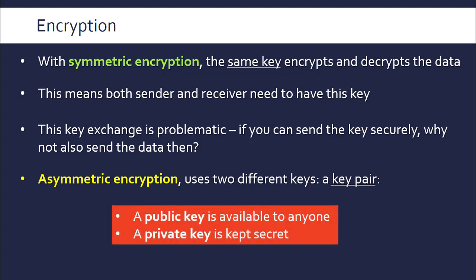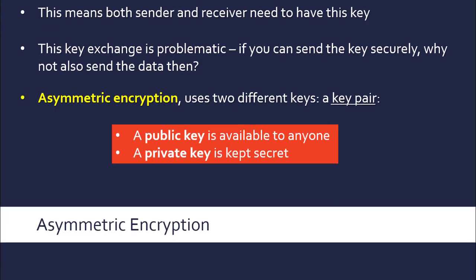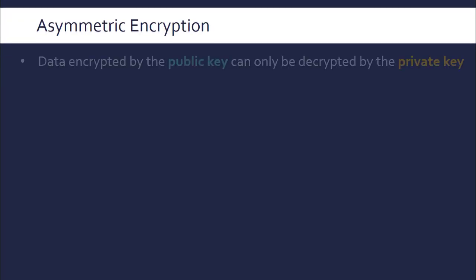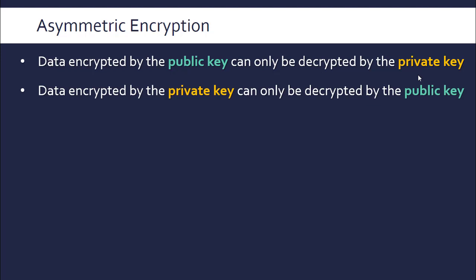One of these keys is a public key, available to absolutely everyone who wants it, and then there's a second secret private key which only one party knows about. The asymmetry comes from the fact that if you encrypt data using the public key, it can only be decrypted by the private key, and the same applies in reverse — data encrypted by the private key can only be decrypted by the public key. So each key can only decrypt what was encrypted by the other key; they're opposites and you need both sides to encrypt and decrypt the data.